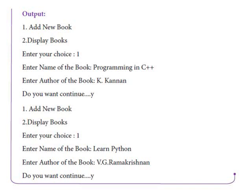Running the program: choice 1 is selected, enter name of the book — 'Programming in C++', enter author of the book — 'Cake'. Then do you want to continue? Yes. Add another new book: enter name of the book, enter author 'VG Ramakrishna'. Do you want to continue? Yes.